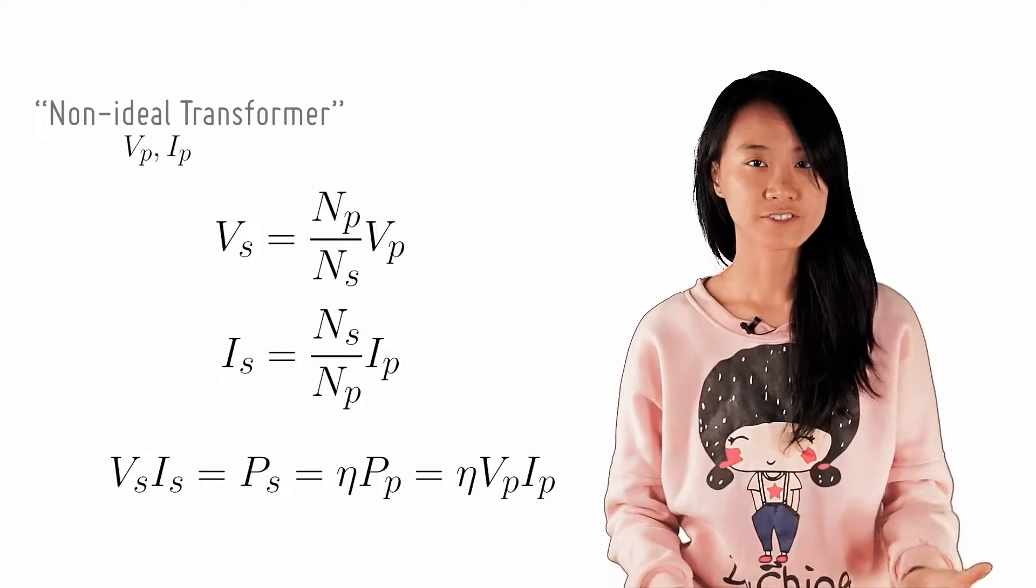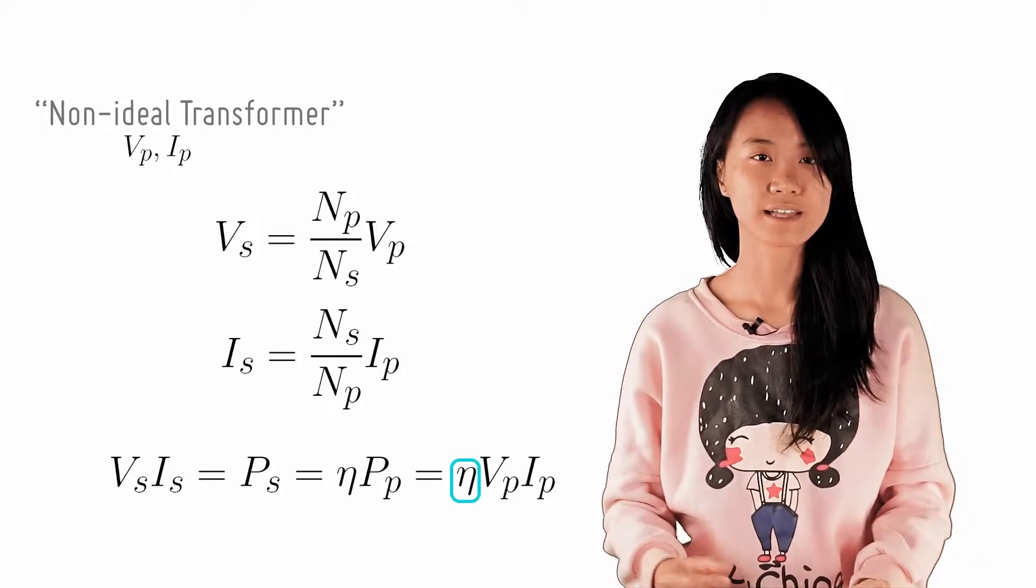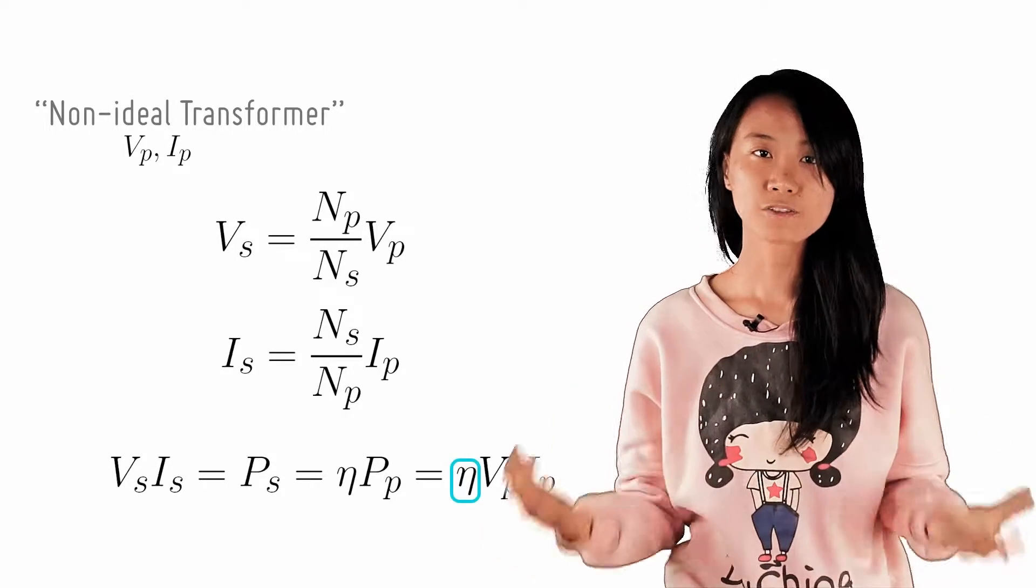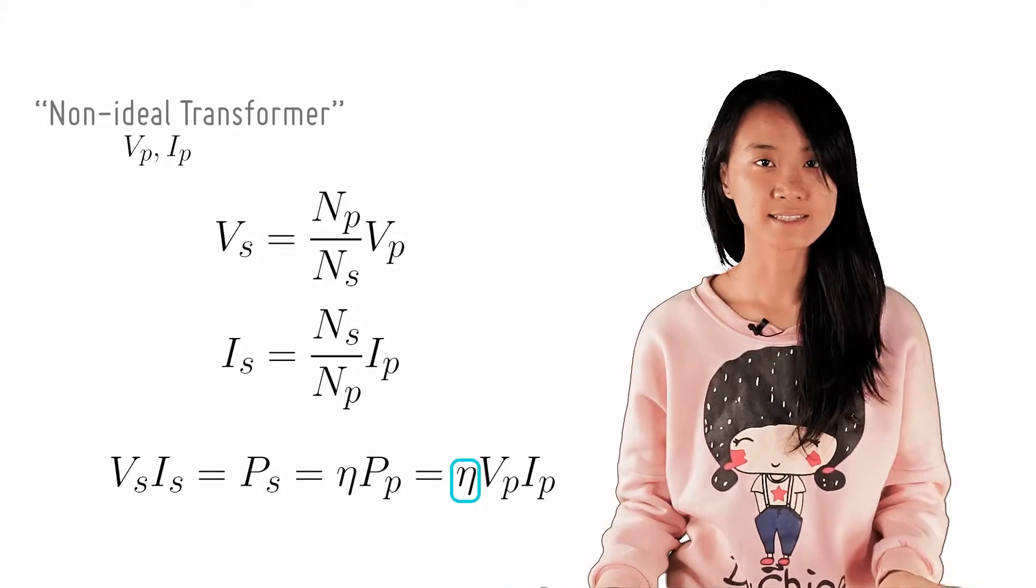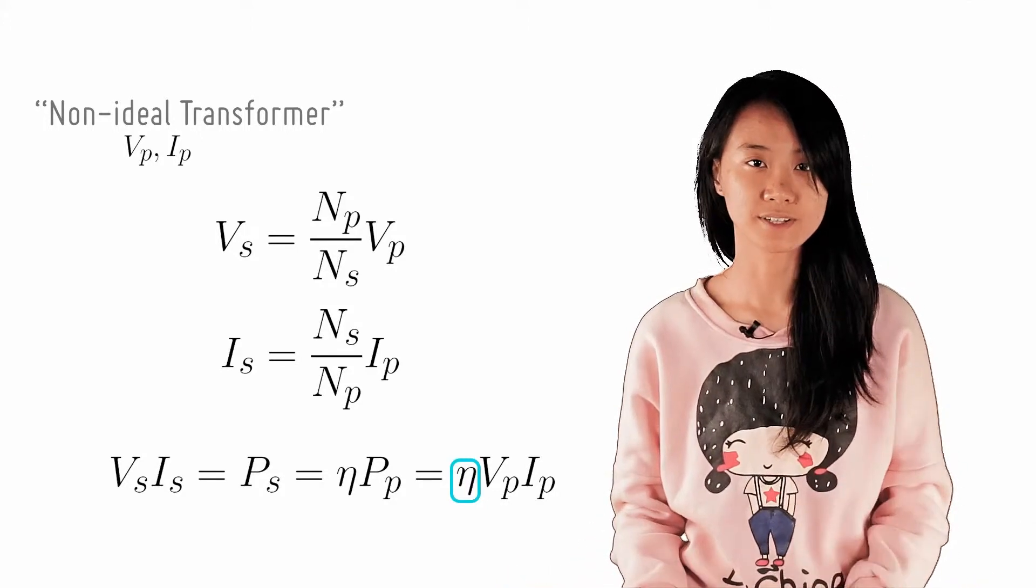And so then there is an extra factor of eta compared to the ideal transformer. So how do we adjust the equations for vs and is to make this factor of eta appear in this equation?